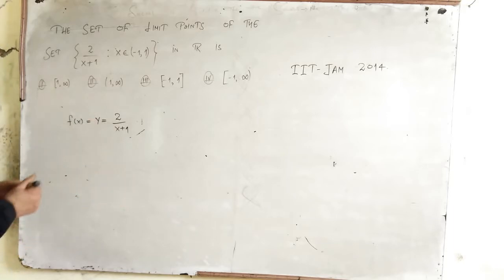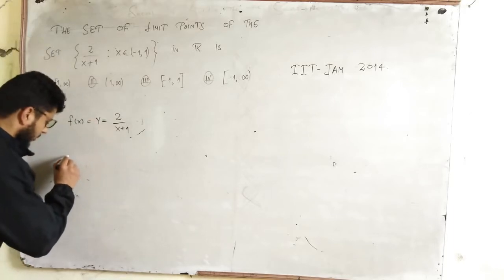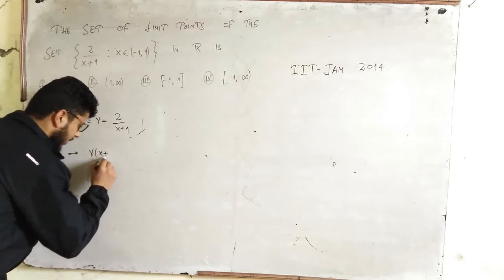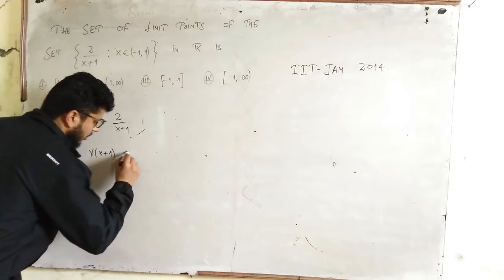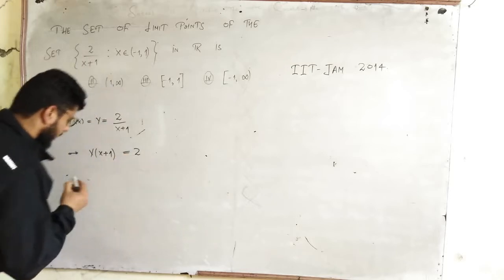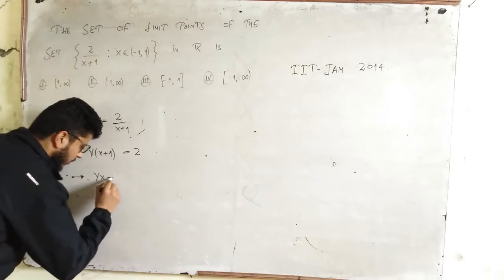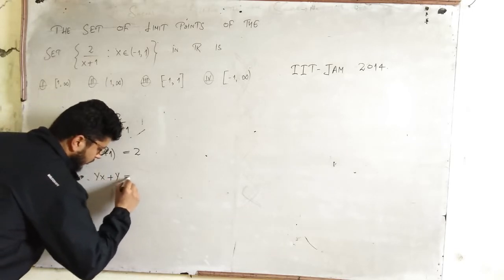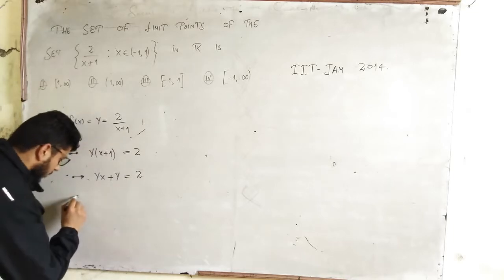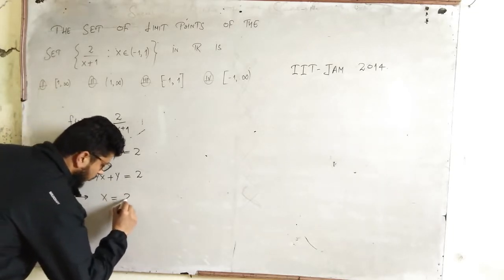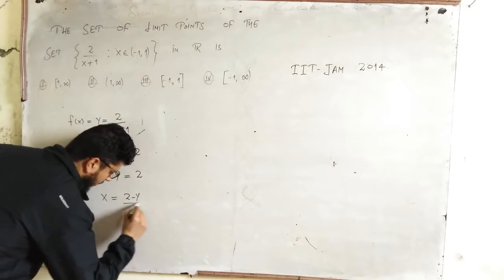After finding the range, whatever range you get, then find the limit points of that range set, which will be your answer. If you want to find the range of this, you can just go with: y times (x+1) equals 2, which implies yx + y equals 2.